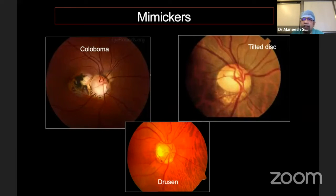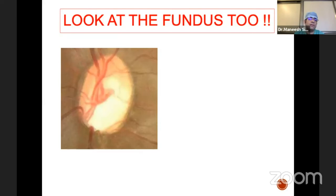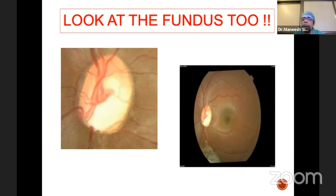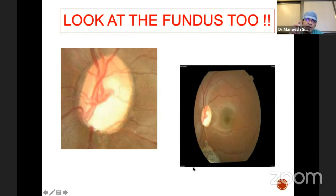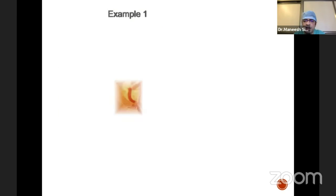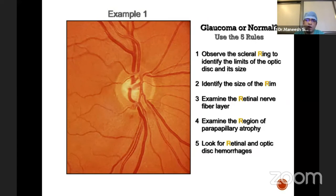We should also be aware of conditions that can mimic glaucoma, such as coloboma, tilted disc, drusen, or optic disc pit — these should be kept in mind. Always perform a complete fundus evaluation; sometimes a disc may look like a cupped disc but on detailed examination you can see a coloboma inferiorly. Before stamping a patient as glaucoma, have a complete fundus evaluation and always correlate your disc findings with visual fields and OCT findings.